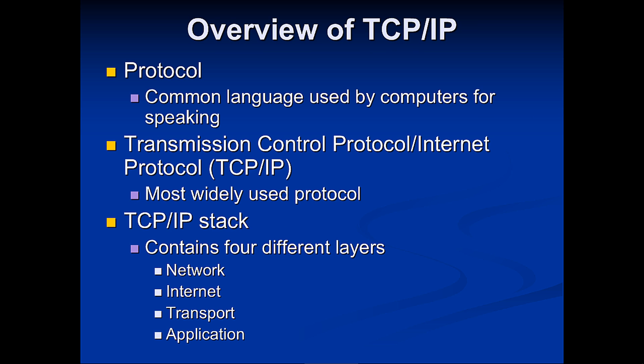TCP/IP is the protocol used as a common language between all computers on the network. It is part of the TCP/IP stack, which is the most widely used stack. The TCP/IP stack contains four distinct layers in its reference model: Application, Transport, Internet, and Network. It's very similar to the OSI model, except in OSI, Application is layers 7, 6, and 5. Internet is the same as the OSI Network layer, and the Network layer here consists of the Physical and Data Link layers of the OSI.